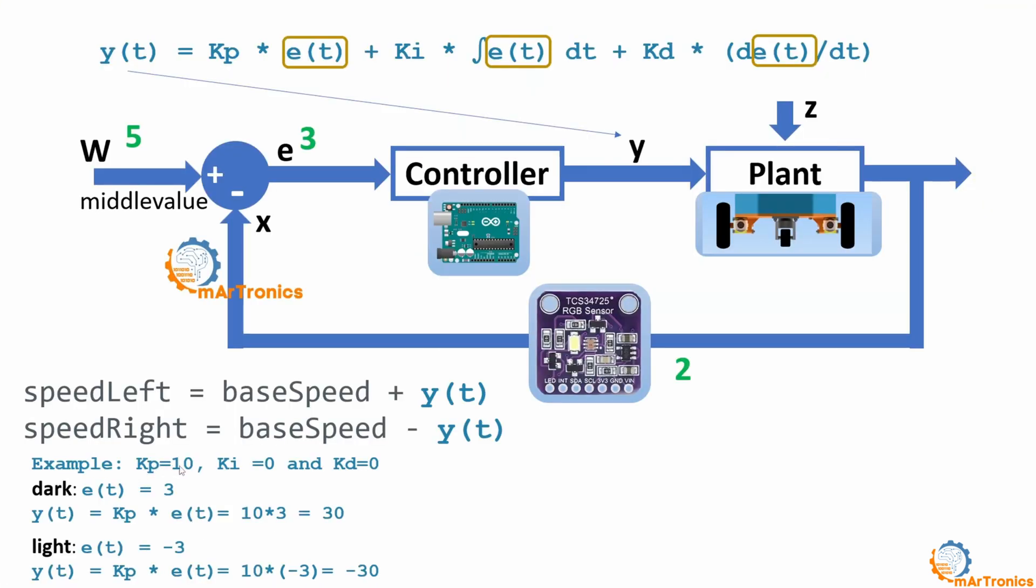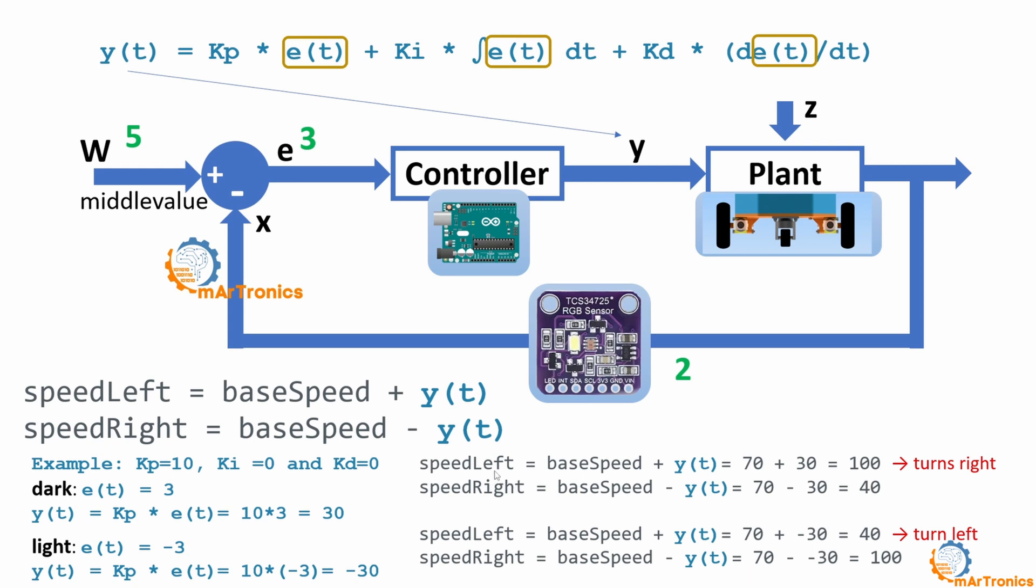For example, we take Kp equal to 10, while the other coefficients equal 0. In the dark place, we have the error equal to 3, so we multiply Kp by the error. This gives us a value equal to 30. While in the case of the sensor located in the light place, we have an error value equal to minus 3, and the controller output will give a value equal to minus 30. When we apply this to the speed of the two motors, our motor speed will become the normal speed, which we define as normal speed. For example, in this case, I defined it as 70. We will add this y to the speed, so it will become 100. While the speed of the right motor, we will subtract this value from it, so it will become 40. This means that the speed of the left motor is greater than the speed of the right motor, and this means the robot is rotating to the right.